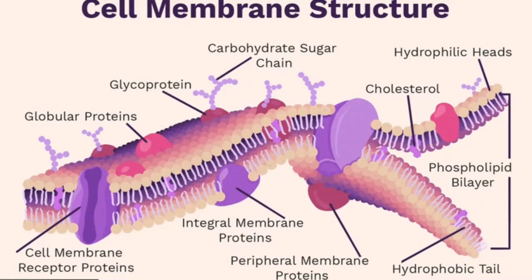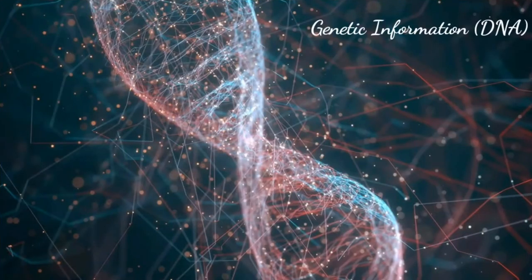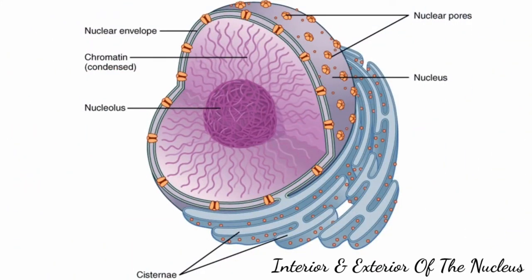First, we obviously have our cell membrane. Most cells will also have some form of genetic information. One of the unique qualities of eukaryotic cells is that its DNA is enclosed in a membrane-bound organelle. This organelle is the first one we'll talk about, and it's known as the nucleus. Its main purpose is acting as the control center of the cell and enveloping the genetic information.